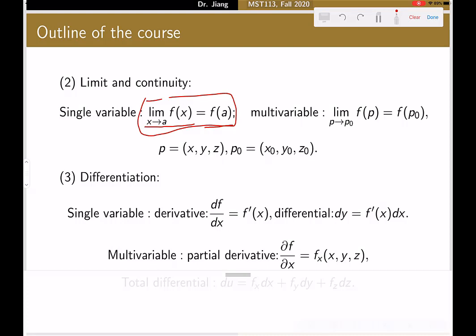And in multi-variable case, we have very similar notation. But this time, we have a point with three coordinates. And we ask the same question. If a point is approaching a fixed point P0, what's happening to its value. And that's the concept of limit.